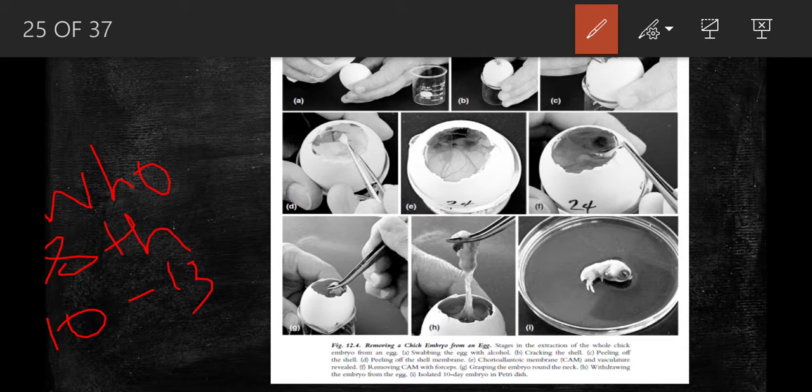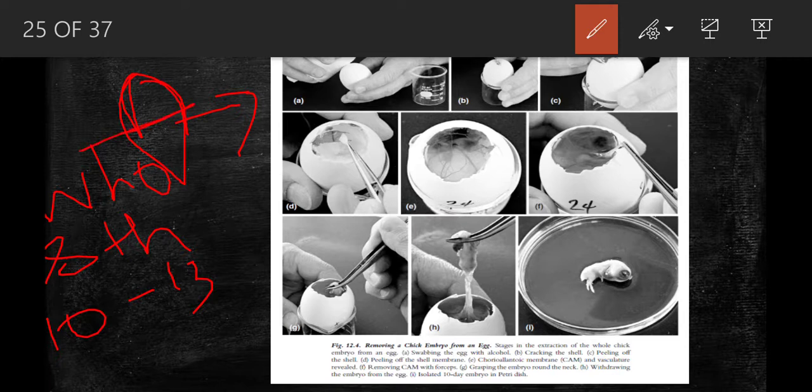Before starting the experiment, you have to swab or wipe the whole thing with 70% alcohol, then keep the blunt end in the beaker.